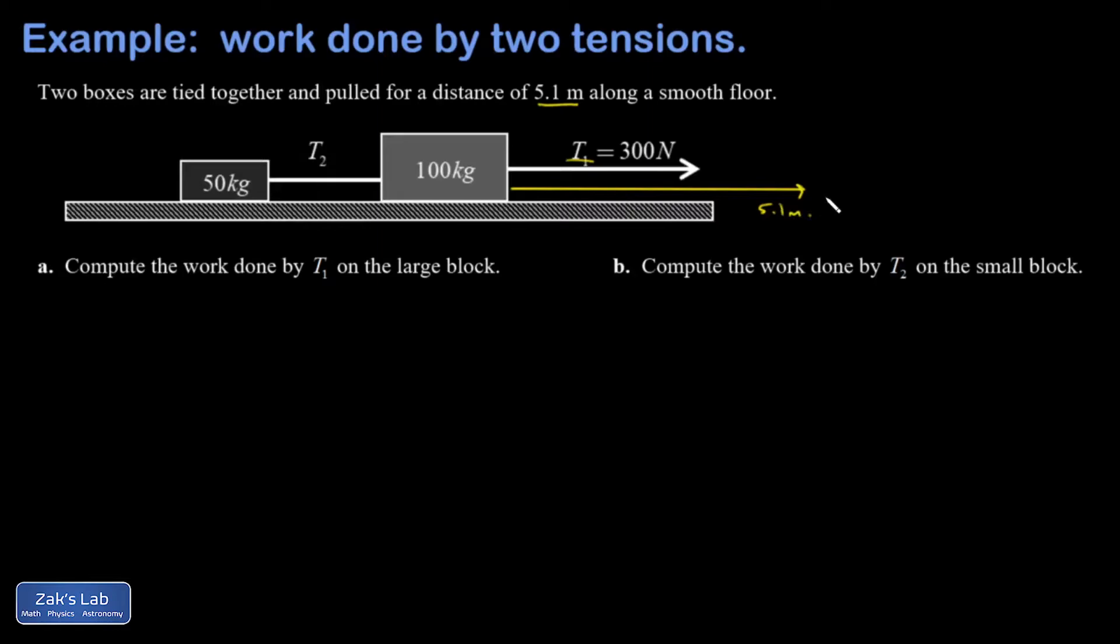So when I compute the work the cosine of theta part is just one. The cosine of an angle of zero between these vectors is just one. So my work is the simplest case here. It's going to be 300 newtons pulling for 5.1 meters and I get 1530 joules.